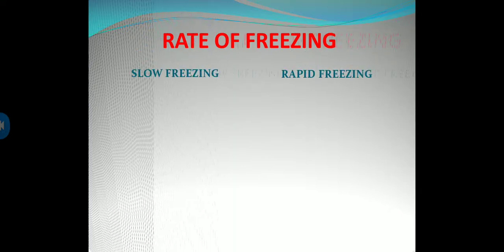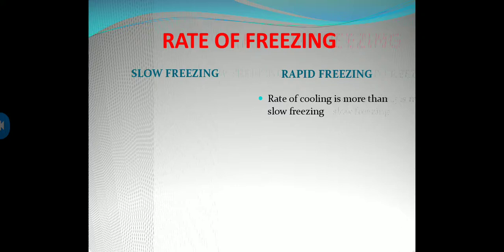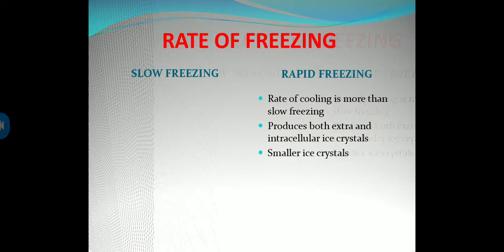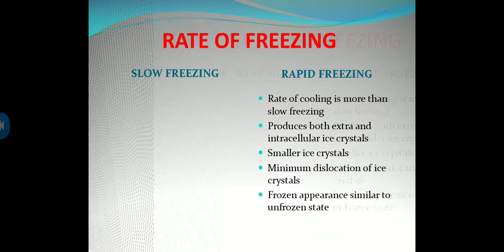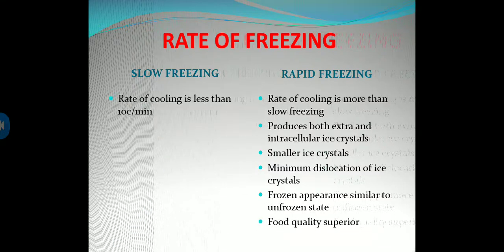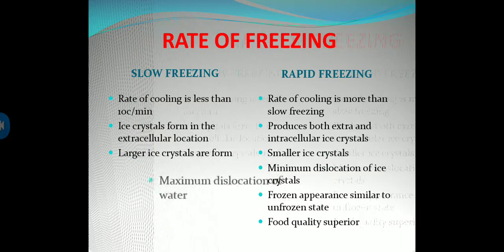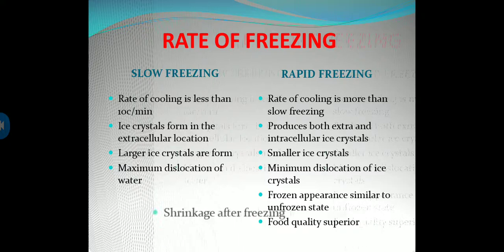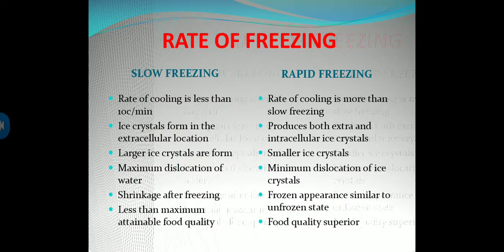There are two types of freezing: slow freezing and rapid freezing. In rapid freezing, the rate of cooling is higher; it produces both extra- and intracellular ice crystals, smaller ice crystals, minimum dislocation of ice crystals, and frozen appearance similar to the unfrozen state. In slow freezing, the rate of cooling is less than 10°C per minute; ice crystals form in extracellular locations, large ice crystals are formed, maximum dislocation of water occurs, and shrinkage after thawing leads to less than maximum attainable food quality.